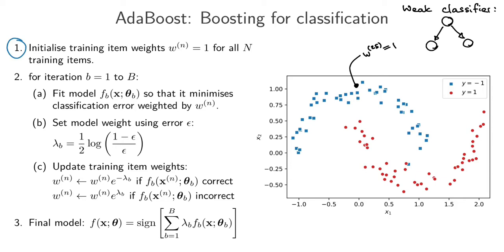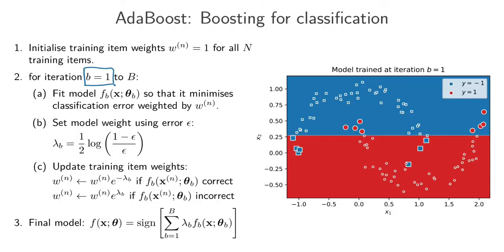Now we go into step number two and the first iteration, where B equals 1. The first step is to fit a model f1(x, θ1) so that it minimizes the classification error rate weighted by W_N. At this point all weights are equal, so this step really just means take the dataset and fit the model to it — we're training a decision tree stub with a single split on the moon-shaped data.